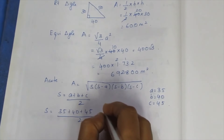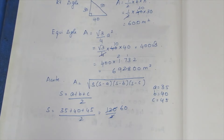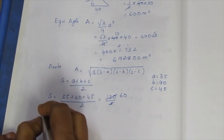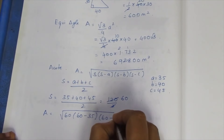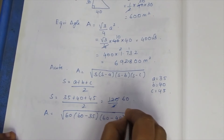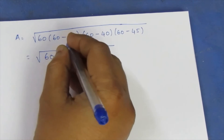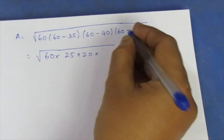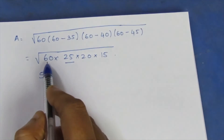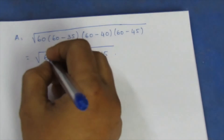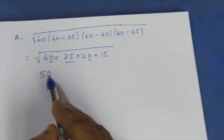Substituting into Heron's formula: Area = √(60 × (60−35) × (60−40) × (60−45)) = √(60 × 25 × 20 × 15). We now simplify this product using prime factorization to find the square root.